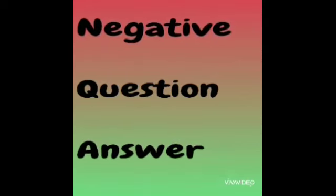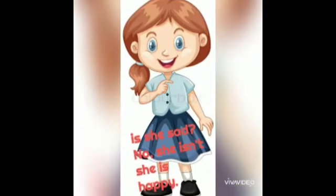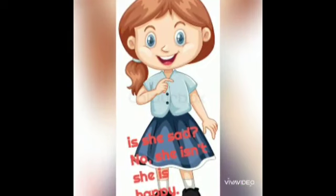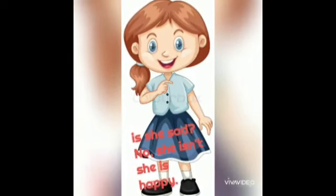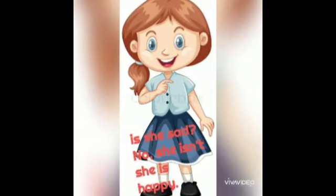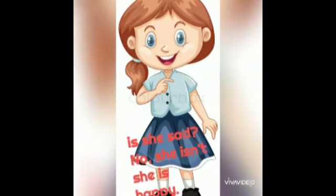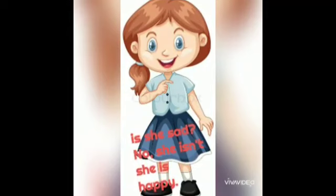For example: Is she sad? Next, no, she is not. She is happy. Here, in the first sentence, 'is she sad' is in question form. And second, 'no she is not' is in negative form. And third, 'she is happy,' that means 'is' is in positive form, which means answer form.